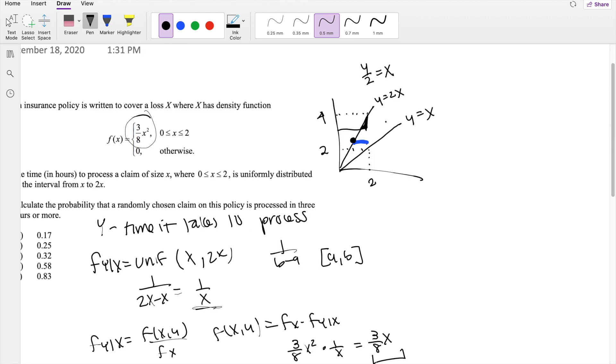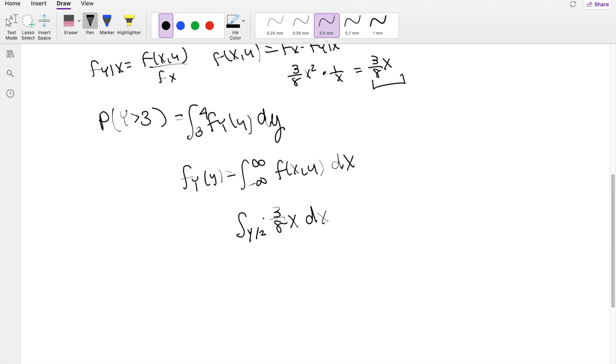And what would be the upper limit? Well, no matter what, no matter where you are in this line, the maximum value that x could be is 2, because this is where x exists on. So this equals 2.